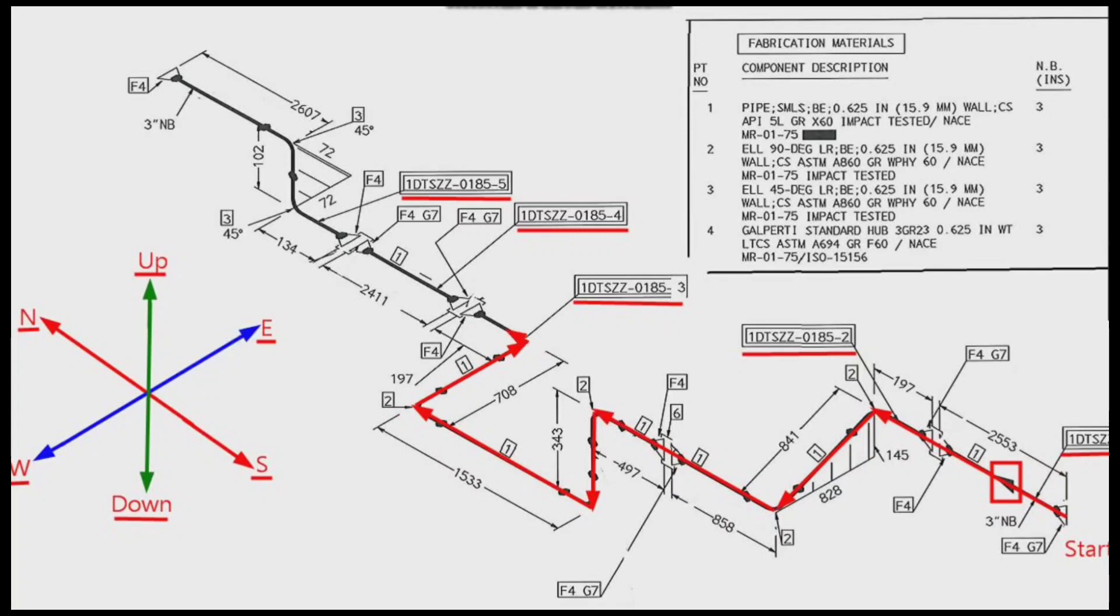The pipeline travel then continues to the northward, where the pipeline moves first to the east along the dashed line 72 mm and then to the north along the dashed line 72 mm, under a 45 degree angle.